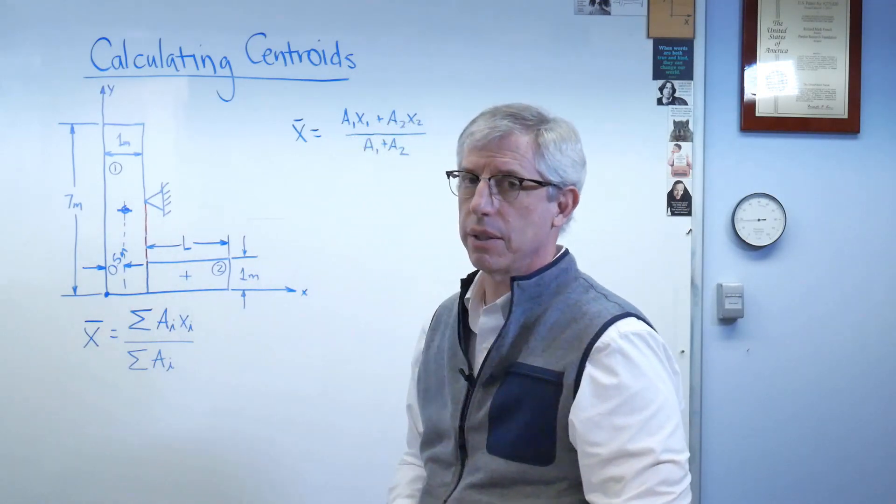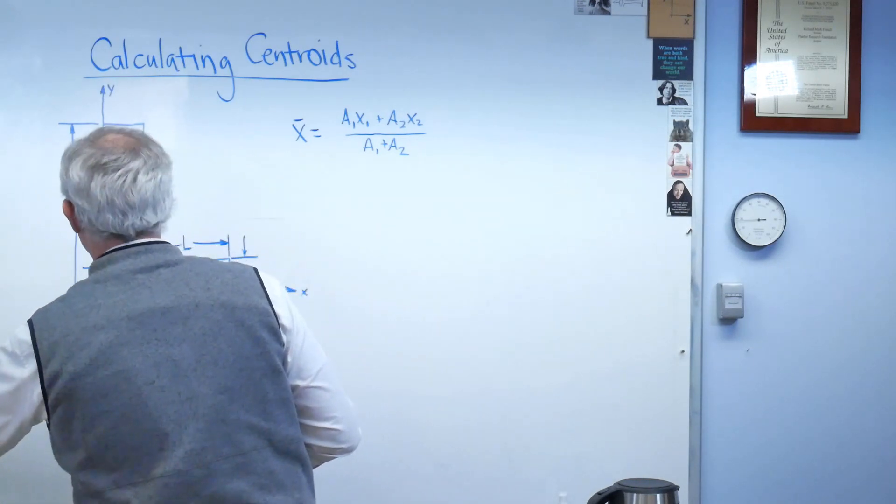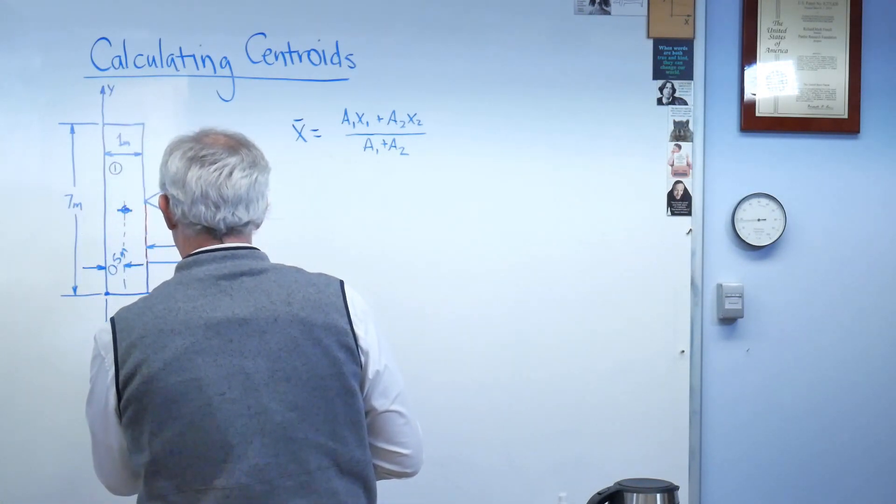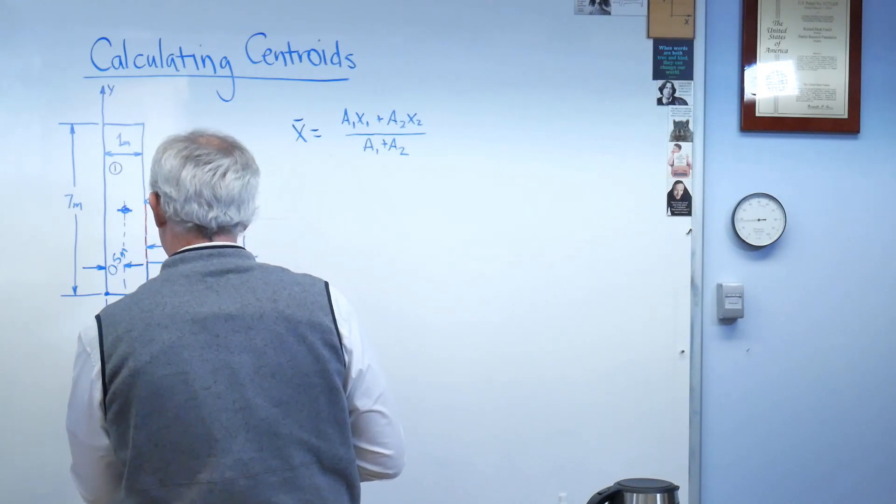Centroid location here is l over 2 from that end. Well, that's not the location I need. I need it from the origin, so let's get rid of that. I don't need that anymore. So from there to there is 1 plus l over 2.